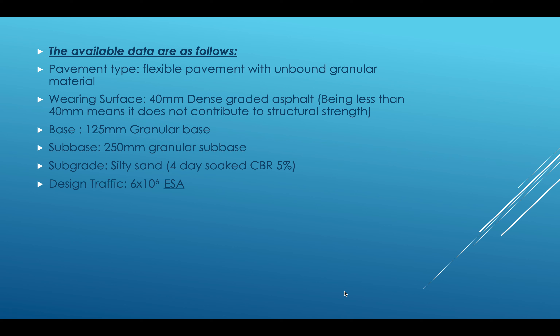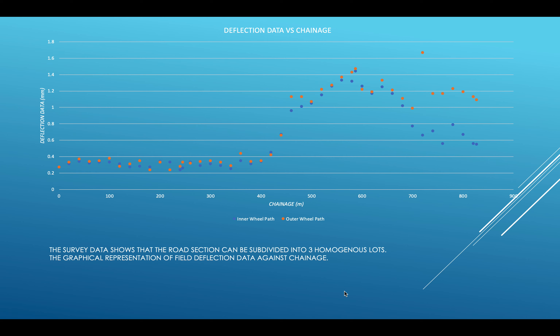The test our survey team has done is called the deflection test — the Falling Weight Deflectometer — which collects the deflection of the pavement surface. They collected data along 0 to 827 meters, recording both inner wheel and outer wheel data. Since the greatest deflection and degradation of pavement occurs on the outer wheel, we've plotted the outer wheel data against chainage.